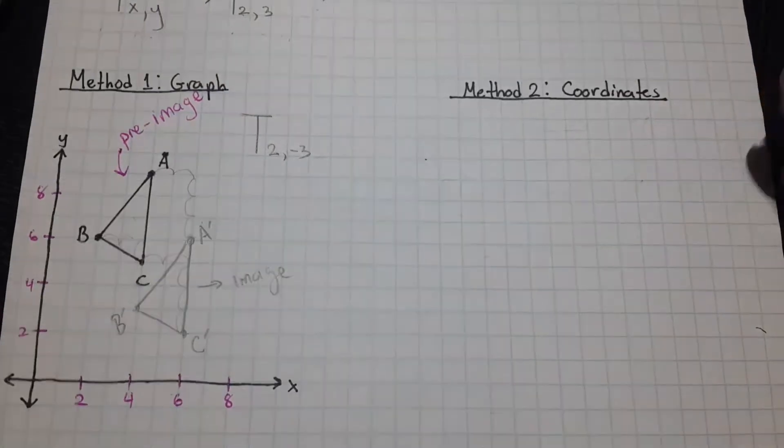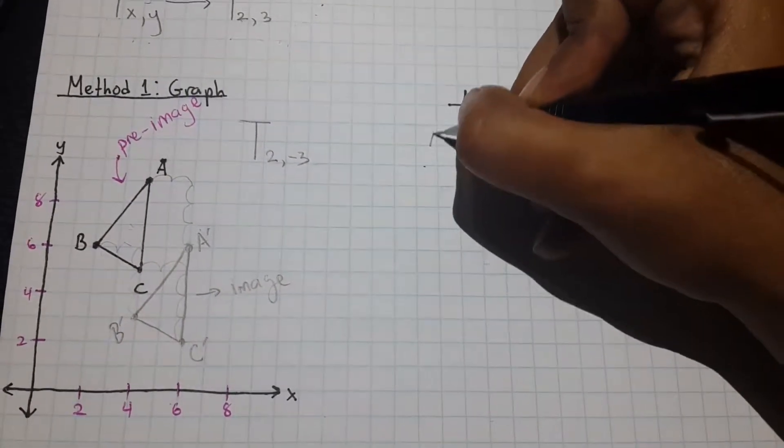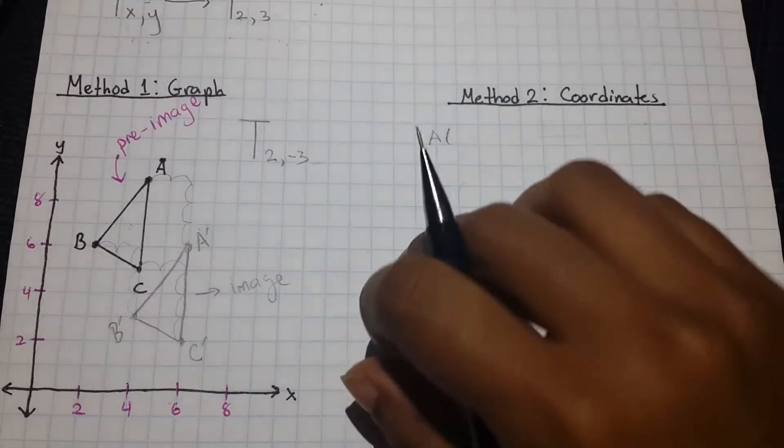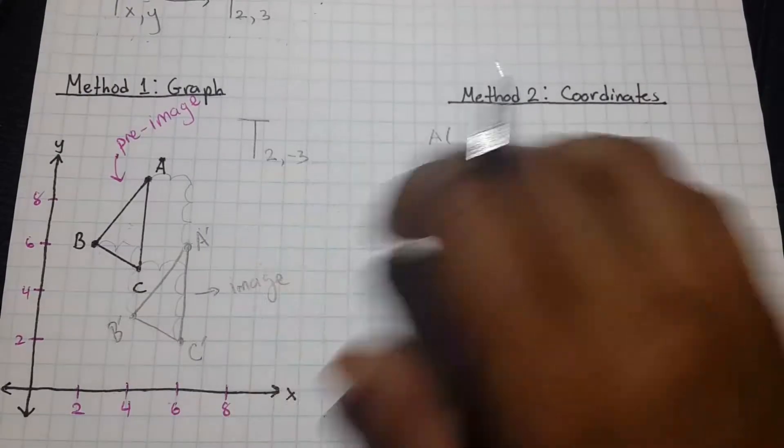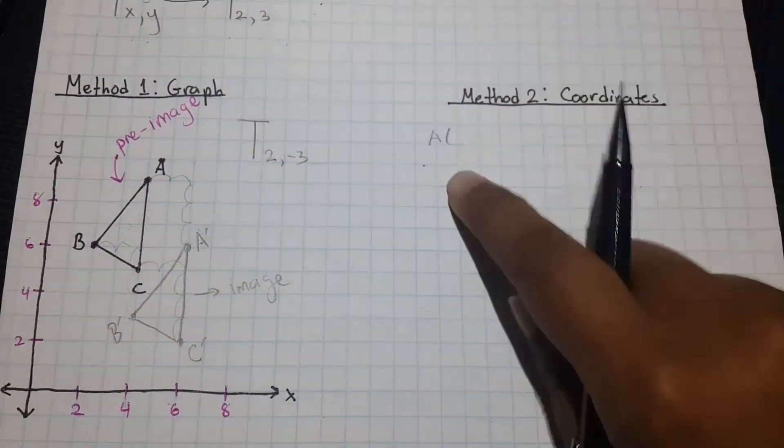So let's say we were in a situation where they just gave us coordinate points. You can either take the time to draw out the figure on the coordinate plane, or you can just apply the appropriate operations between the coordinate points and the numbers that they give you for the translation.